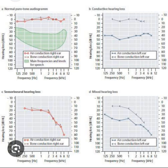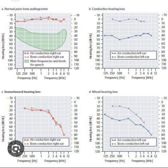Mixed hearing loss is a combination of SNHL and CHL, meaning there is abnormal sound conduction and damage to the inner ear and/or retrocochlear structures. On an audiogram it presents as both a decrease in the bone conduction line and an air-bone gap. Mixed hearing loss results from many pathologies, including otosclerosis — a disease in which both the ossicles (CHL) and the inner ear (SNHL) are affected due to abnormal bone growth.